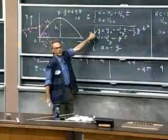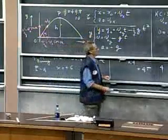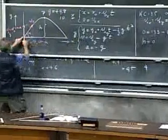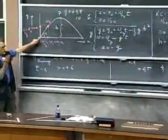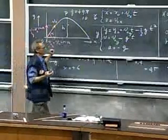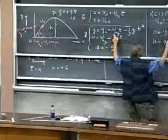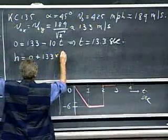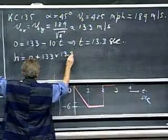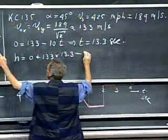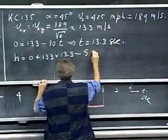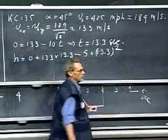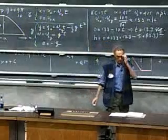It's about 13.3 seconds. And what is this distance h now? Now I have to go to this equation. I say h equals zero, because I'm going to define the point where the plane starts its trajectory. I call that y zero zero. I'm free to do that. H equals zero plus 133, that is the speed, times 13.3 seconds minus one-half times g, that is five, times 13.3 squared.